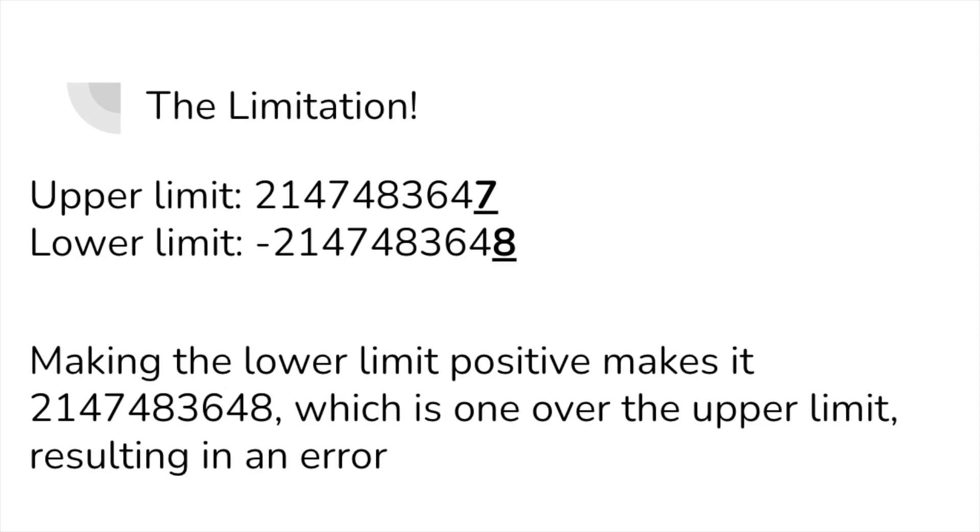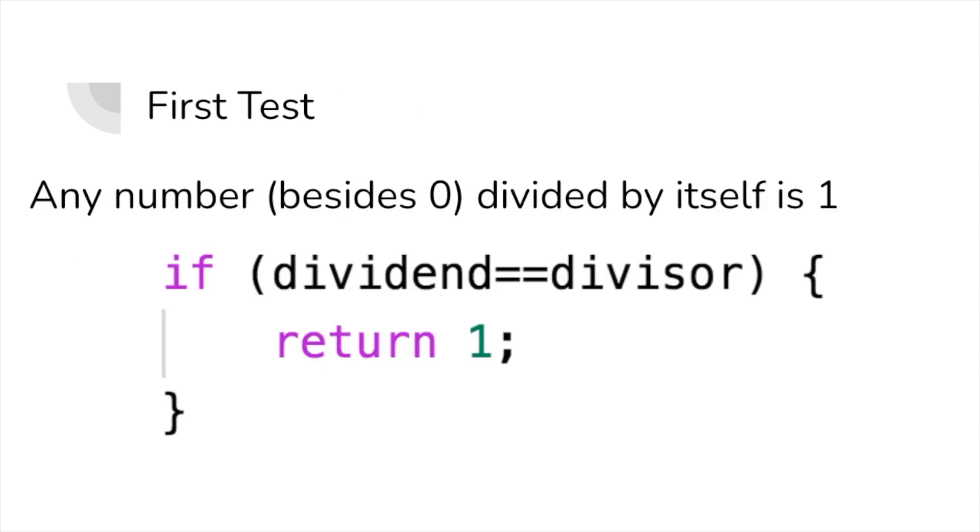So before we can add our simple division through subtraction method, we have to do some small tests at the start. First we're going to be using a simple division principle. When we divide a number by itself, we get 1, which is what we're going to be implementing here. If the divisor is the same as the dividend, we will be returning 1.